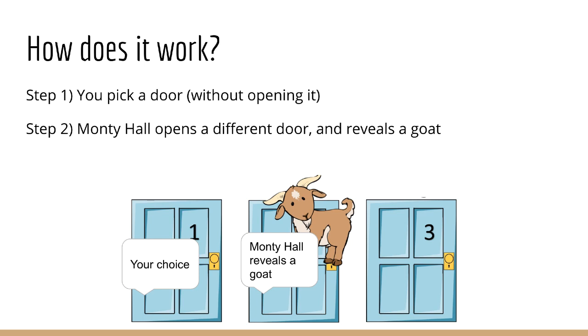To make this clear, the host of the game show must open one of the doors you did not choose, and he must open a door that has a goat behind it. Therefore, it will always be the case that, whatever door Monty Hall opens, it will be a goat.